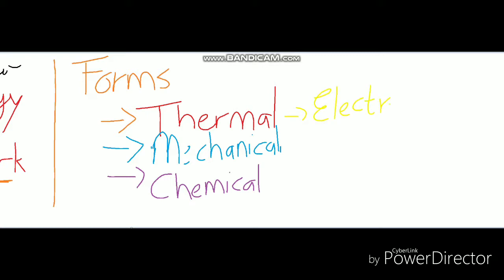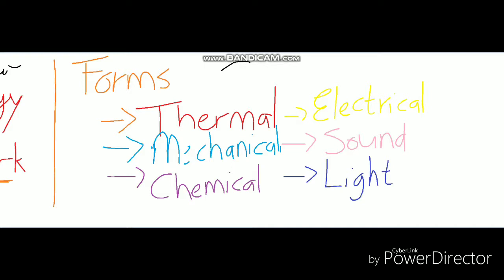Next is electrical energy — a very famous one — all of our appliances use electrical energy. Then there's sound energy: anything that makes sound waves gives off sound energy. And the last one is light energy. These are the six forms of energy we use and look at in grade six.